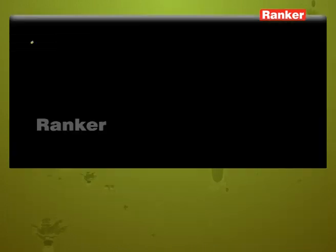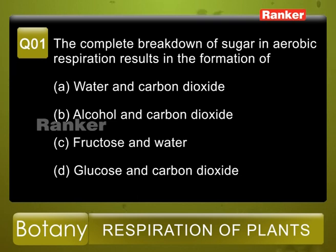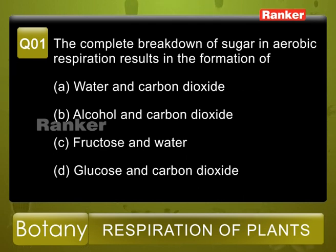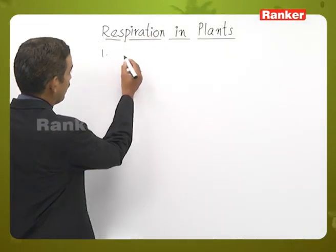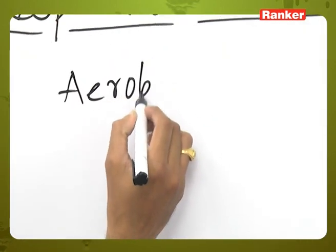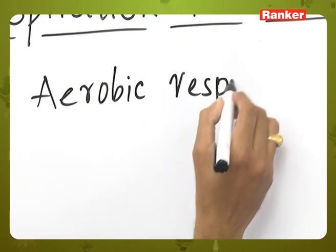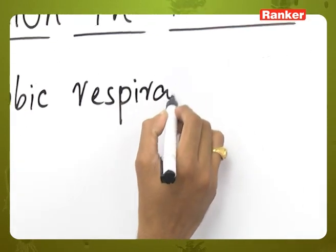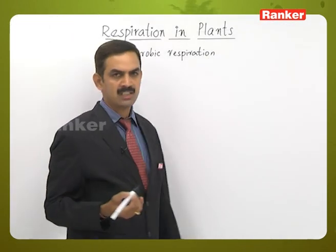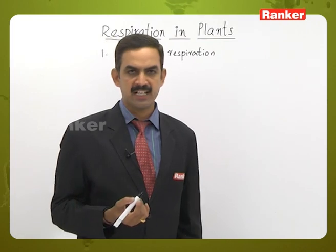Question number one: the complete breakdown of sugar in aerobic respiration results in the formation of — options: A) water and carbon dioxide, B) alcohol and carbon dioxide, C) fructose and water, D) glucose and carbon dioxide. In aerobic respiration, this is a process which takes place in mitochondrion, in which the complete breakdown or complete oxidation of food materials will be taking place.